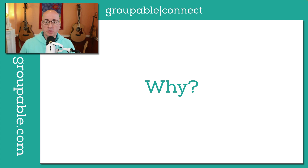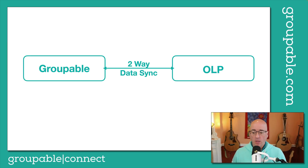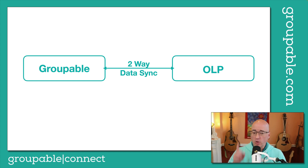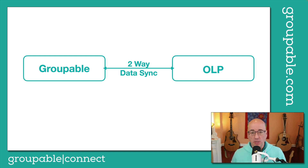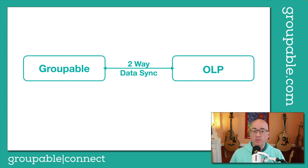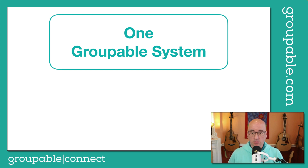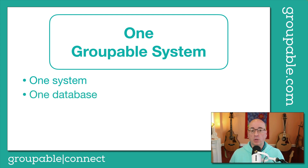Let's talk about why we're doing this transition from OurLodge Page and why we've built a new member portal called Connect. In the past, Groupable and OLP — the membership server on the Groupable side and the OOP servers on the OLP side — we've had to do a two-way data sync between these servers because OLP was a freestanding application, separate from the member database. Synchronizing that stuff was honestly a serious amount of work. When you have two sources of truth, it's really hard. So what we're transitioning to is one Groupable system, and this is a big deal because it gives us the most important thing: one database.